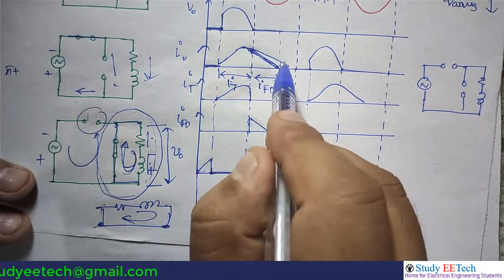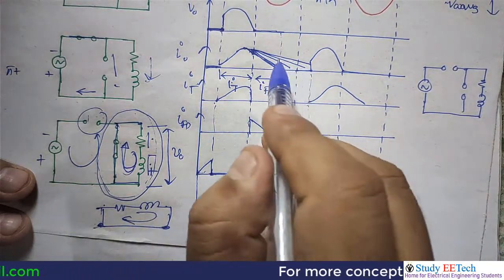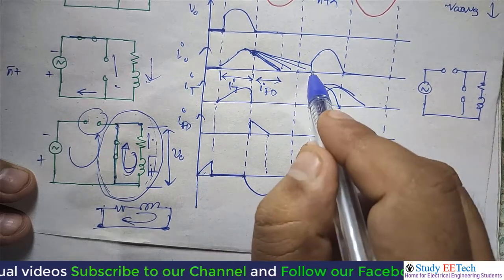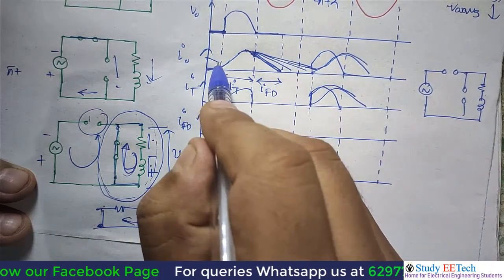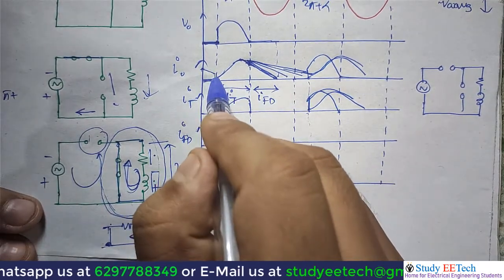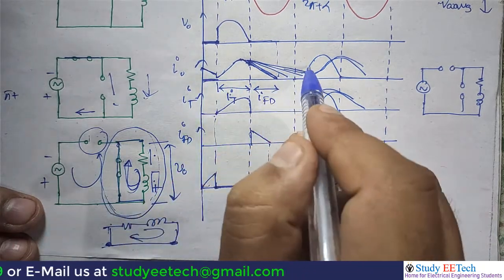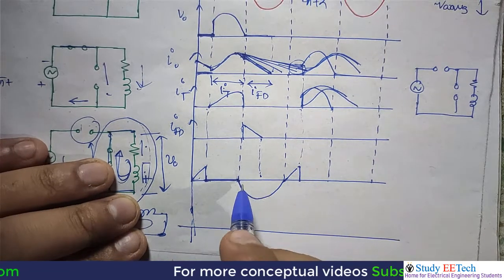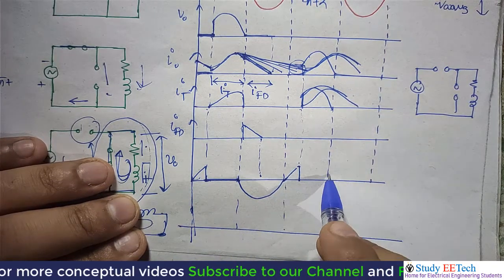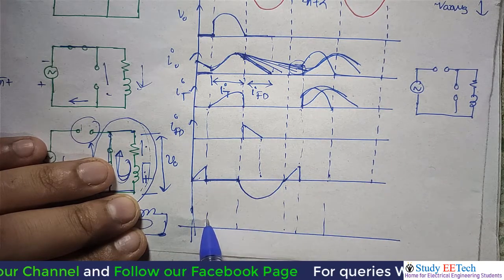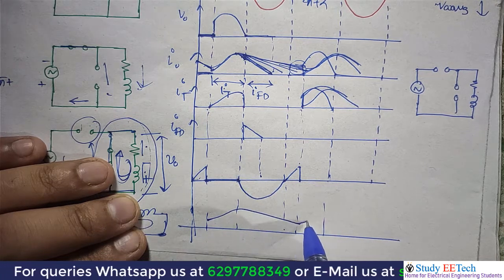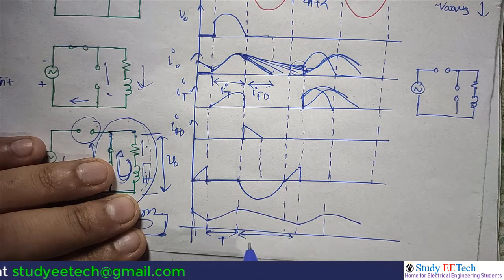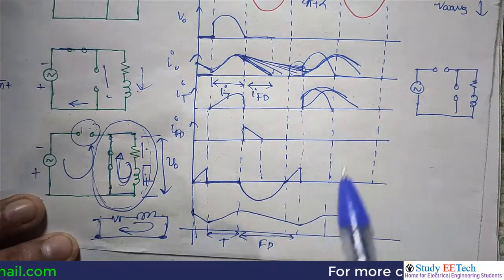The current waveform can be more flat depending on the inductance value L, and we can get continuous conduction. Let me correct an earlier mistake — the voltage waveform goes here and the current waveform goes here. In steady state some current exists at the start of each cycle. The thyristor conducts from alpha to pi and the freewheeling diode conducts from pi to 2π plus alpha. So previously we had discontinuous conduction; now with the freewheeling diode we get continuous conduction.